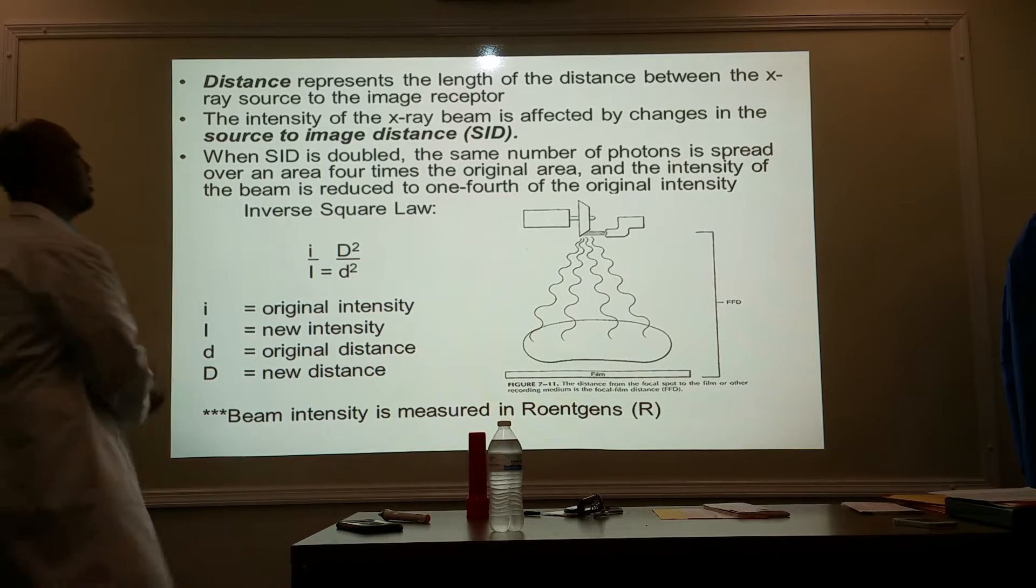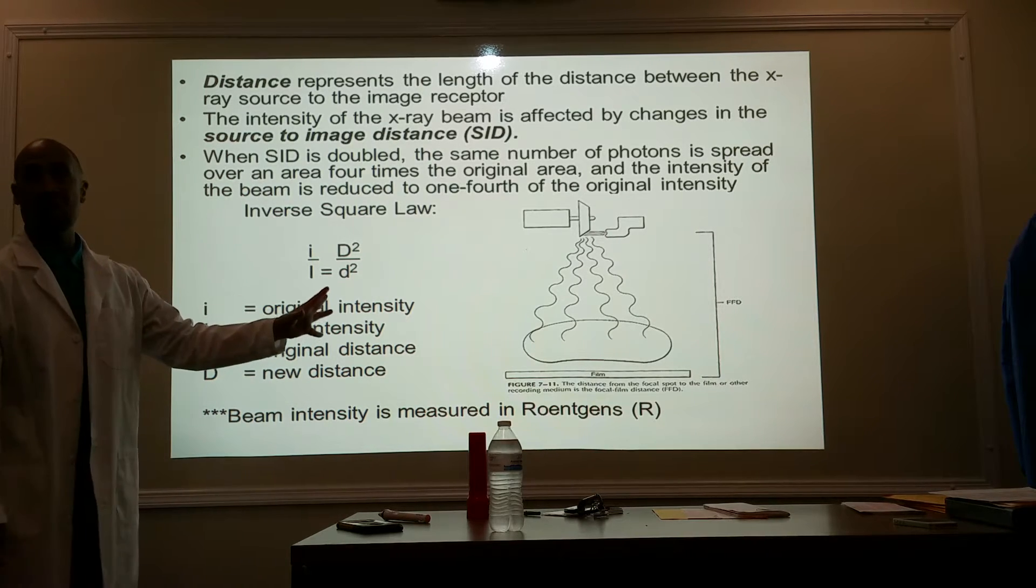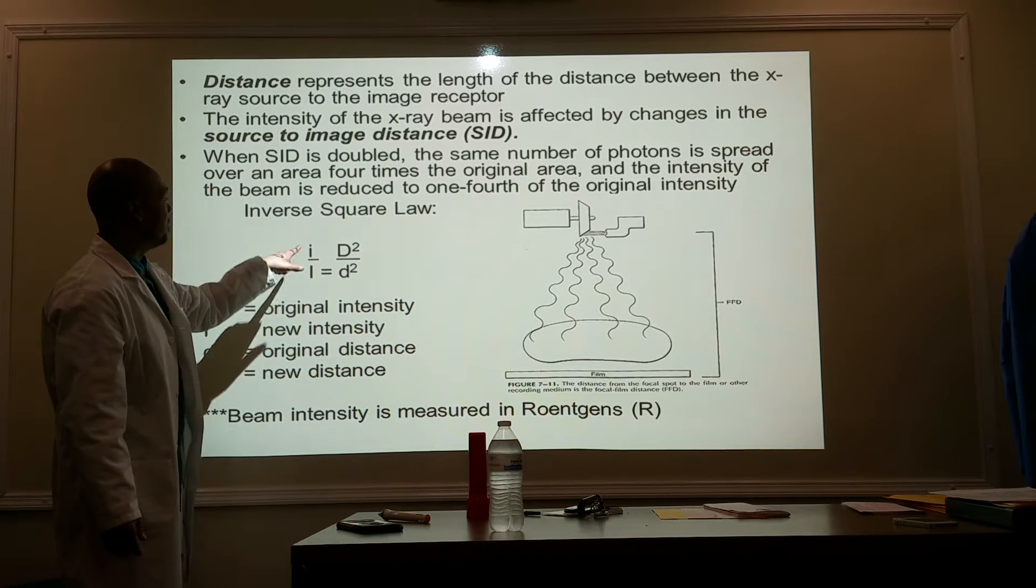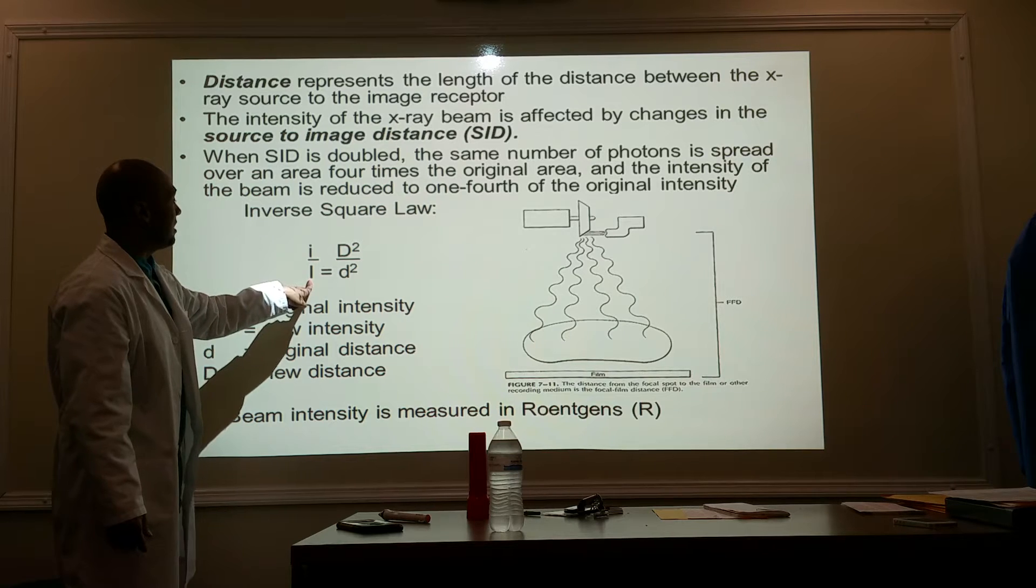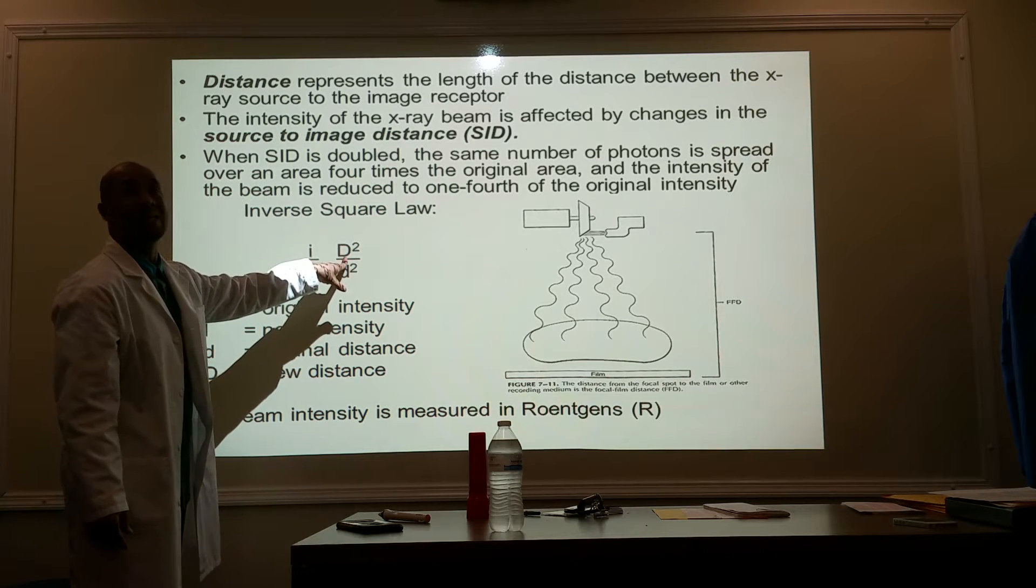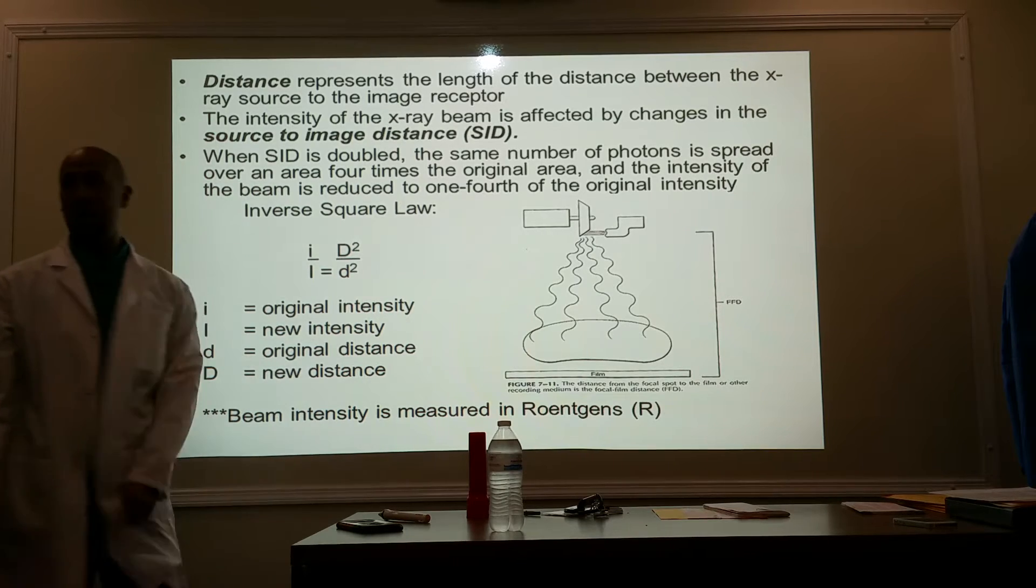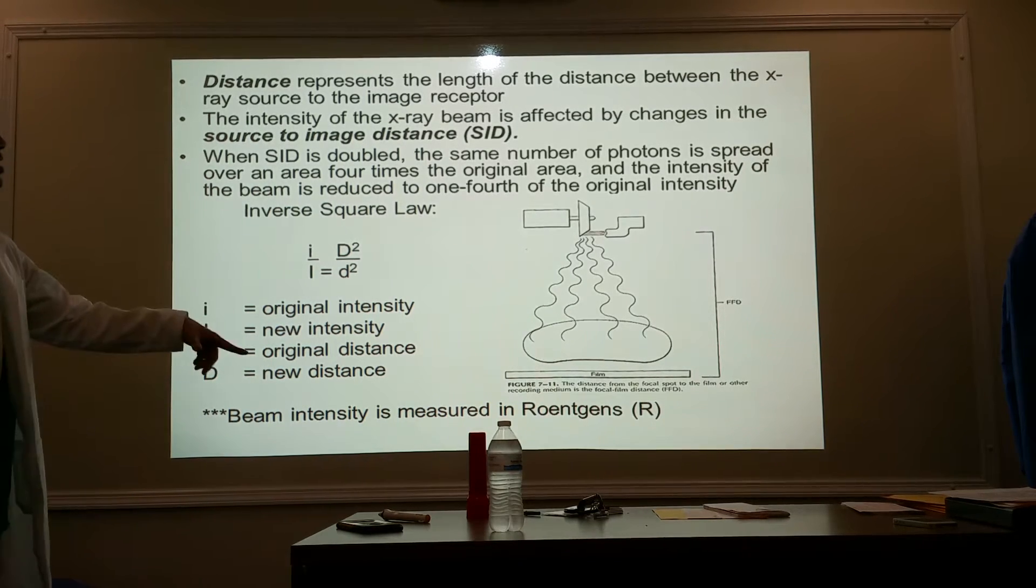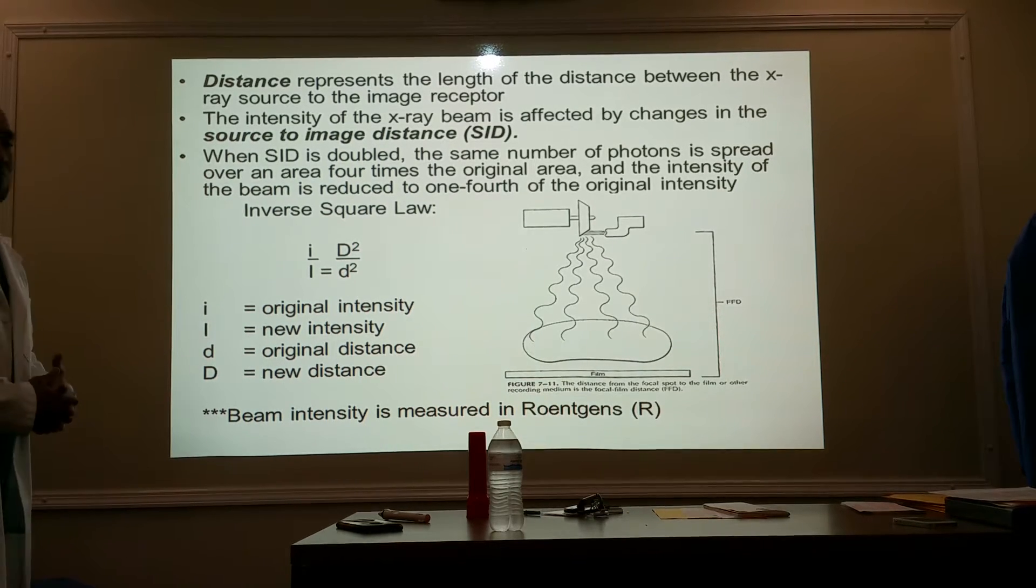All right. So the new formula that we're going to be learning here is what's known as the inverse square law. And it's written like this. It's inverse because you're going from the original intensity over the new intensity is equal to the new distance squared over the old distance squared. And our answer is going to be in Roentgens.